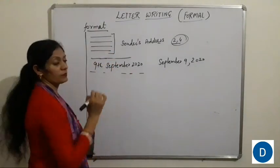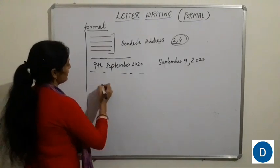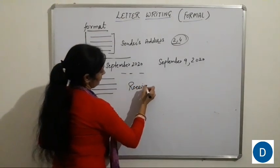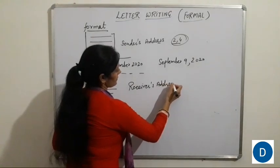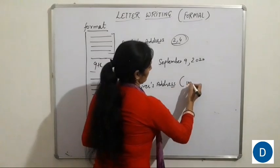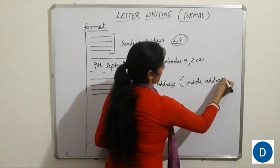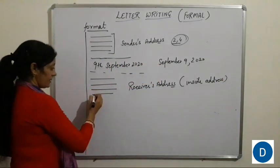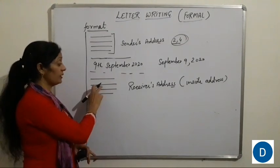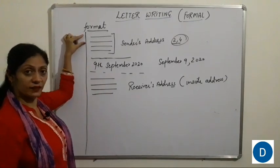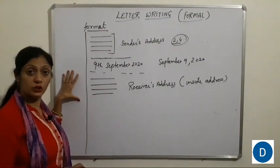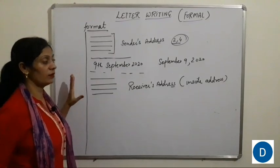After the date, again leave a single line and write the receiver's address, also called the inside address. This address should be minimum three lines or maximum four lines. You cannot write it in just two lines. The sender's address can be in two lines, but the receiver's address must be minimum three lines and maximum four lines.